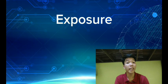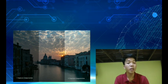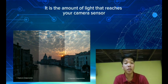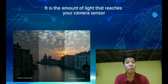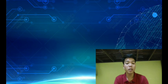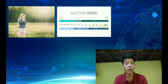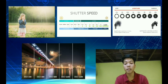Now let's talk about exposure. Exposure is a measure of how bright a photo is as it's saved to your memory card, sometimes referred to as the finished image. Exposure is the amount of light that reaches your camera sensor, and you can adjust the settings of your camera accordingly. Exposure is affected by four things: light, shutter speed, aperture, and ISO.